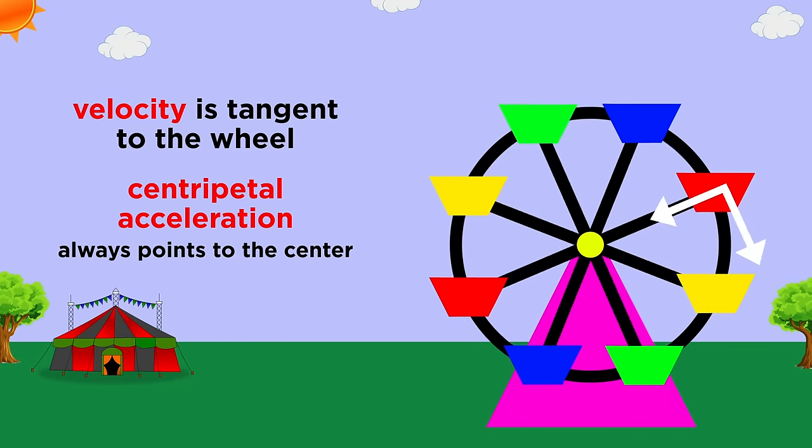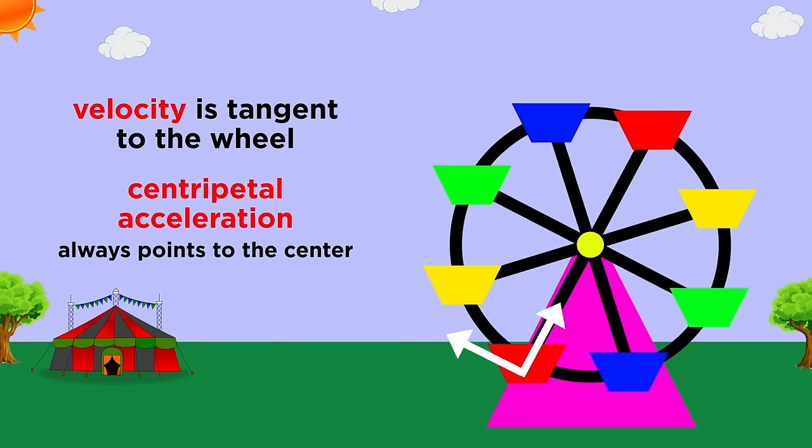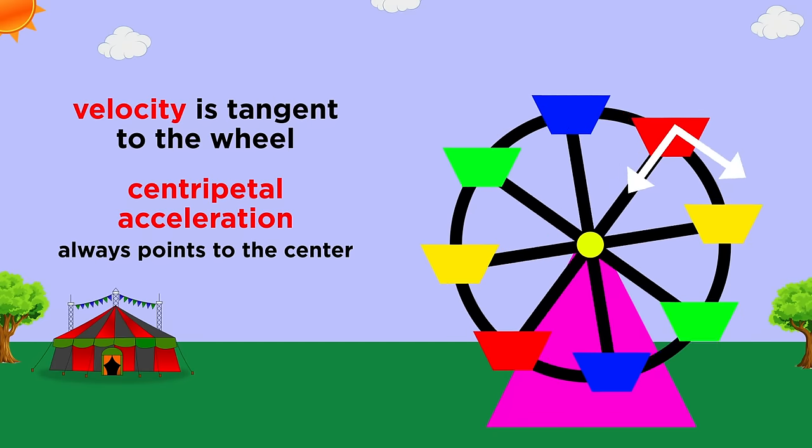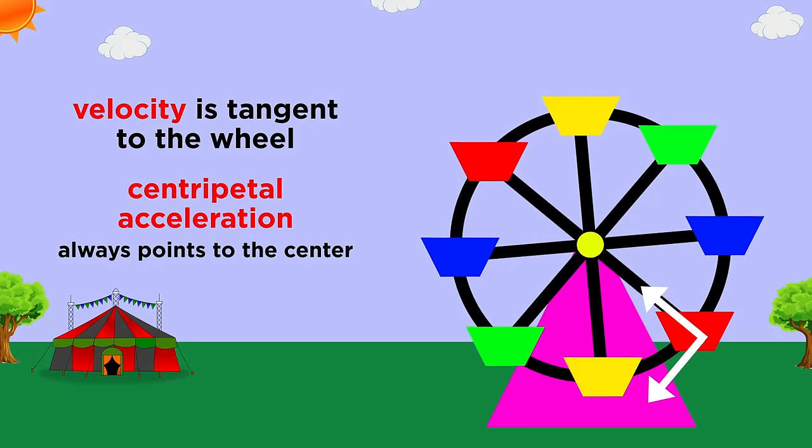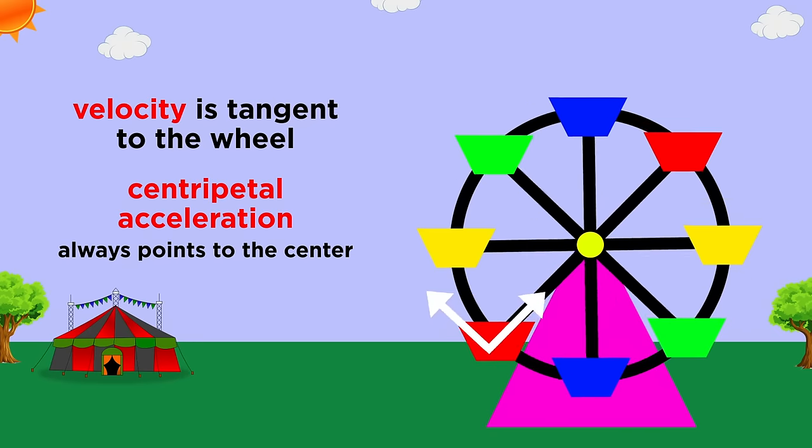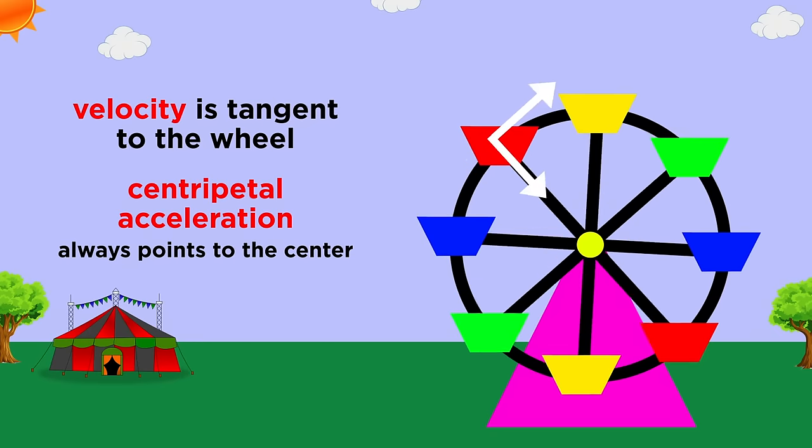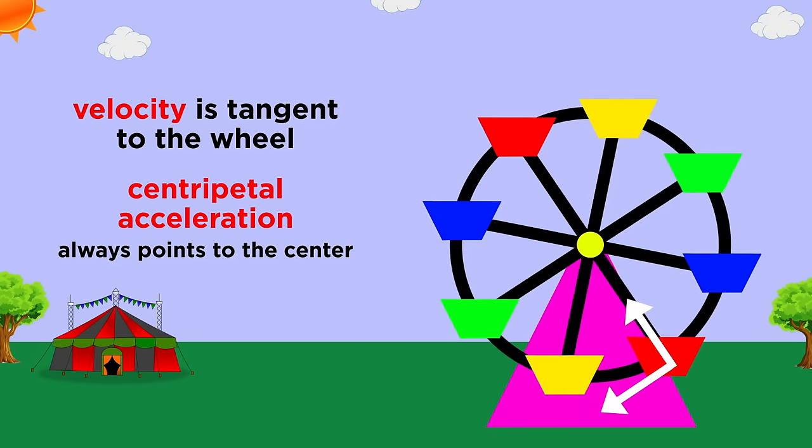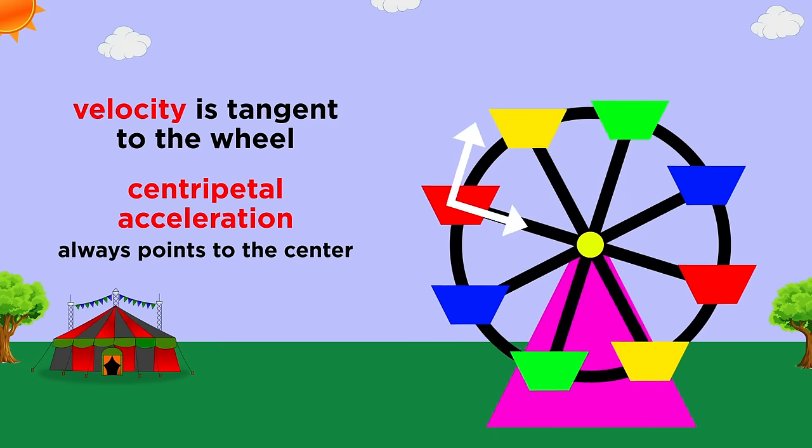The centripetal acceleration will always point towards the center of the wheel, which will in turn continually pull the direction of the velocity vector towards the center of the wheel. This is what produces the circular motion, as though the car is always trying to move towards the center of the circle, but never makes it there because of its tangential speed.